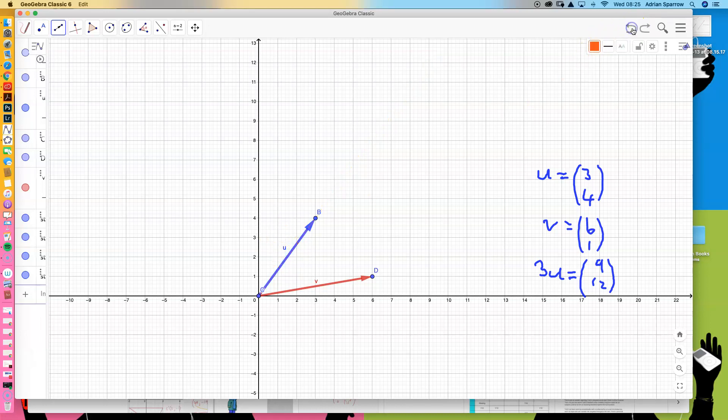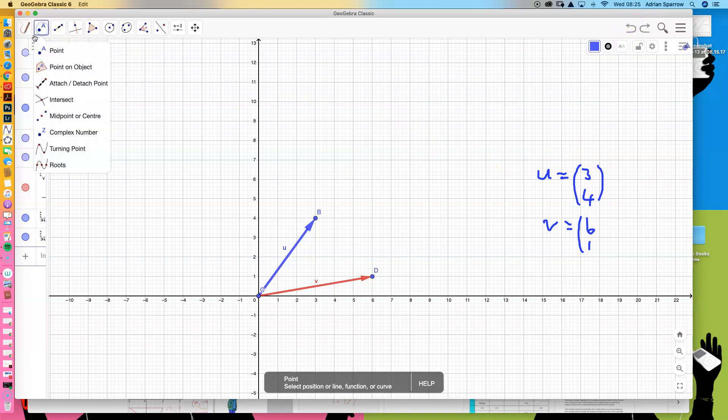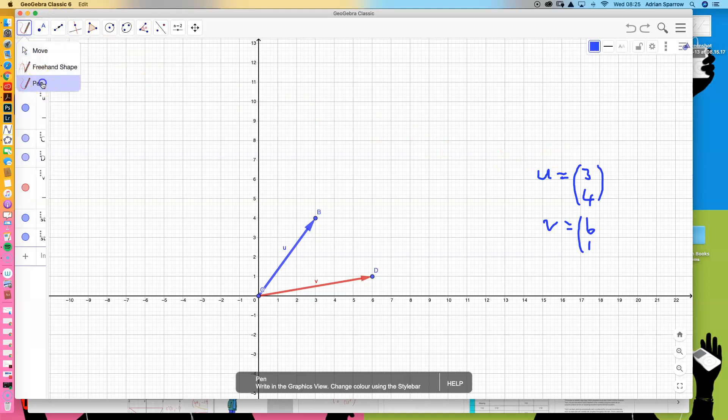The second thing we can do is add these vectors, and when we add these vectors we get a brand new vector. So if I do u plus v, I will end up with the two components: 9 and 5.